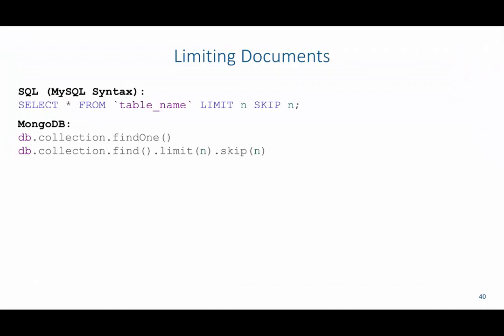To limit documents in SQL, specifically MySQL syntax, we would use LIMIT with the number of documents to return, and SKIP to skip a certain number of documents before limiting the total returned. In MongoDB, to return only one document we'd say db.collection.findOne. To use limit and skip together, we say db.collection.find then .limit with the number to return and .skip to skip a number of documents before applying the limit.